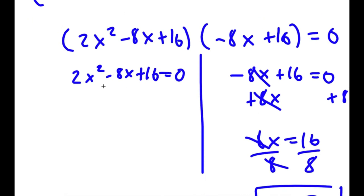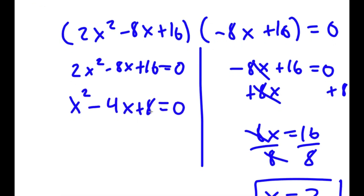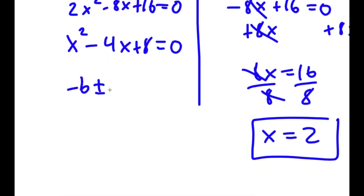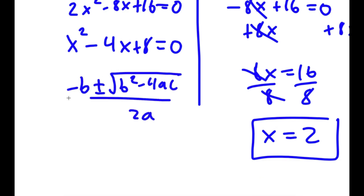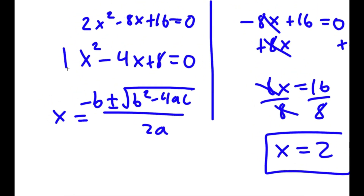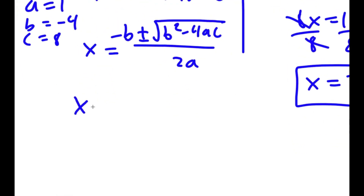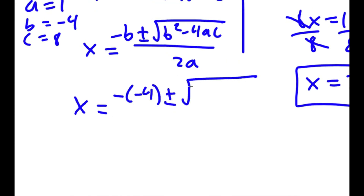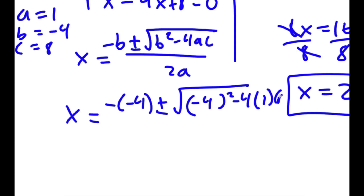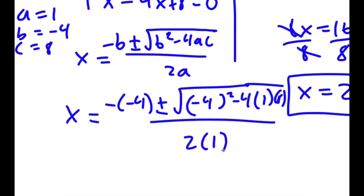For 2x squared minus 8x plus 16, I factor out 2 to get x squared minus 4x plus 8 equals 0. Using the quadratic formula with a equals 1, b equals negative 4, and c equals 8, I get x equals negative of negative 4 plus or minus the square root of negative 4 squared minus 4 times 1 times 8, all over 2 times 1.